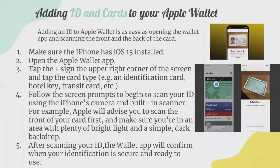To add an ID to your Apple Wallet, make sure your iPhone has iOS 15 installed, then open the Apple Wallet app. Tap the plus sign in the upper right-hand corner, then tap the card type — for example, identity. You can also add your hotel key or transit card. Follow the on-screen prompts and scan your ID using the iPhone's camera and built-in scanner. Apple will advise you to scan the front of your card first in an area with plenty of bright light and a simple dark backdrop. The wallet app will confirm when your identification is secure and ready to use.